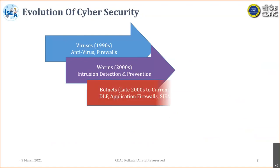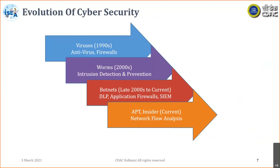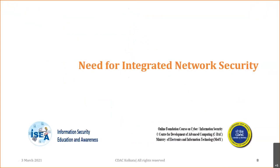Evolution of cyber security: viruses in 1990 — we came up with anti-virus; firewalls in 2000s — for worms we came up with intrusion detection and prevention; in the late 2000s, botnets led to application firewalls; current advanced persistent threats and insider threats led to network flow analysis. So we need integrated network security solutions.